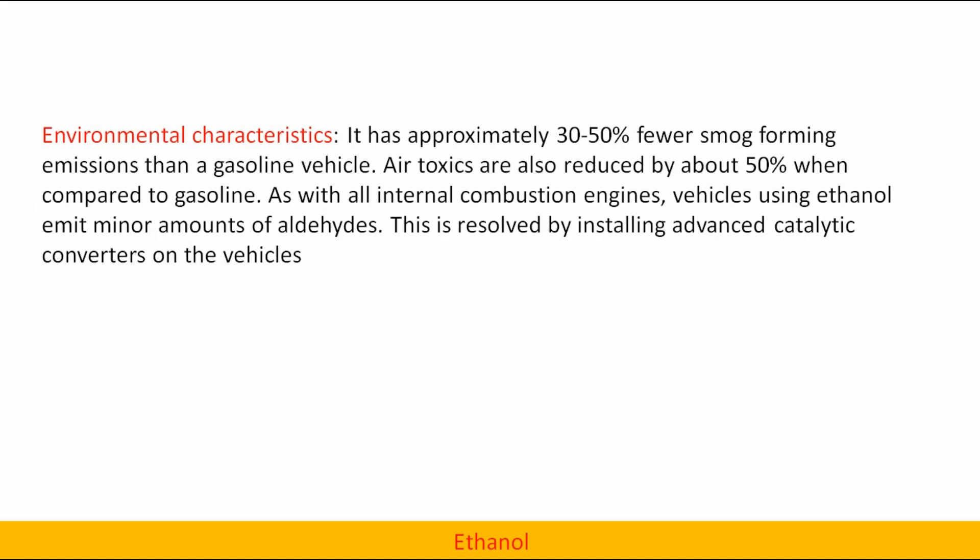Environmental characteristics: Ethanol has approximately 30 to 50% fewer smog-forming emissions than a gasoline vehicle. Air toxics are also reduced by about 50% when compared to gasoline. As with all internal combustion engines, vehicles using ethanol emit minor amounts of aldehydes, which is resolved by installing advanced catalytic converters on the vehicles.